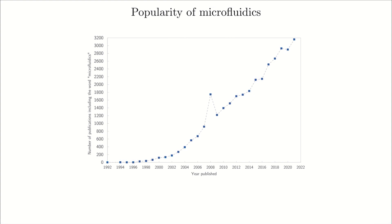Here's a plot showing the popularity of microfluidics in the scientific literature. I went into Web of Science and searched the word 'microfluidics,' and the plot shows the number of publications per year containing that word. Since those early 1990s there were very few papers — sort of one in 1992 — and then we see it grow. There's an interesting spike around 2008 that I'm not entirely sure how to explain, but the general trend is clearly upward.